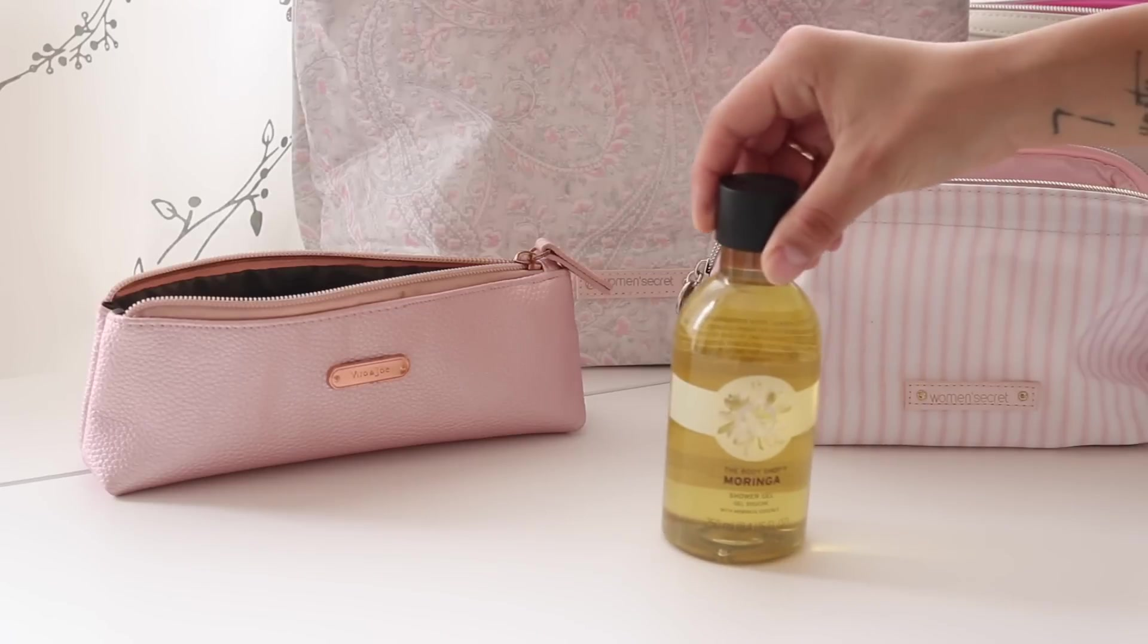Hogyha mindent elhelyeztem a neszeszerekben, akkor még egy adag vattapamacsot is mellé teszek, és ebbe a pici neszeszerbe helyezem el az ecseteket és a sminkeléshez szükséges eszközöket. Nagyon szeretem a nagy tárolóba beletenni a kis tárolót, hogy minél összeszedettebben nézzen ki majd a bőröndben.